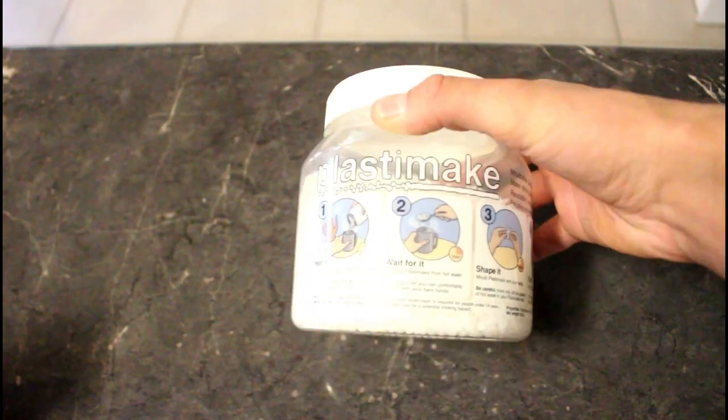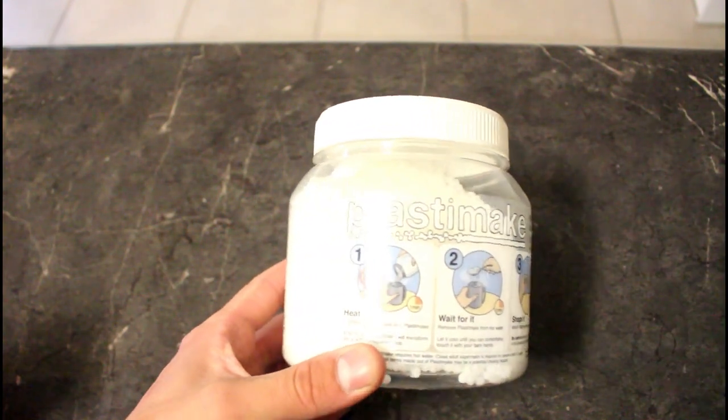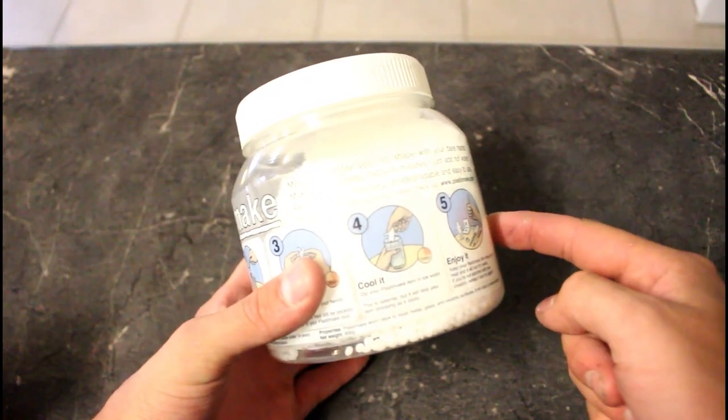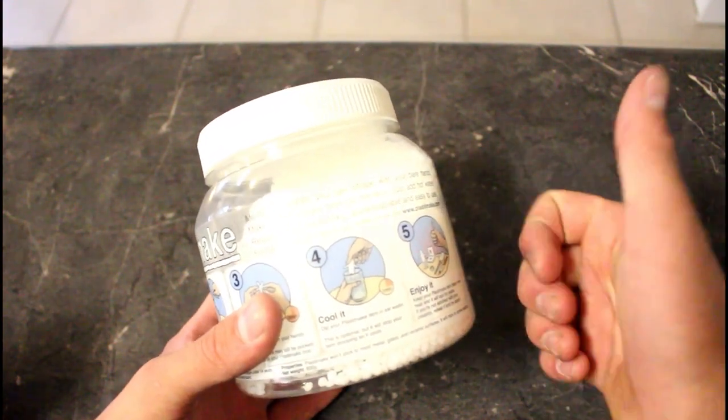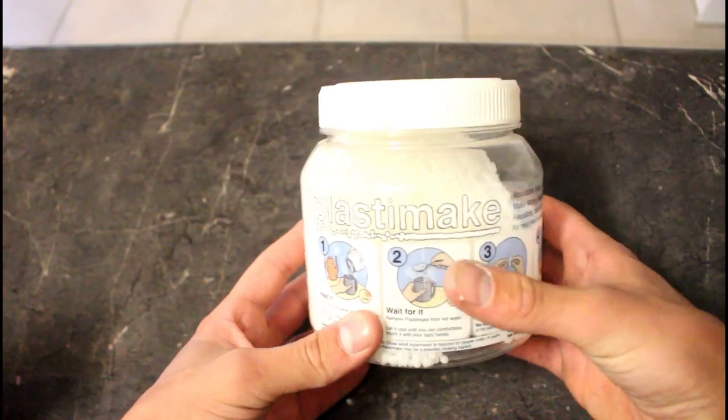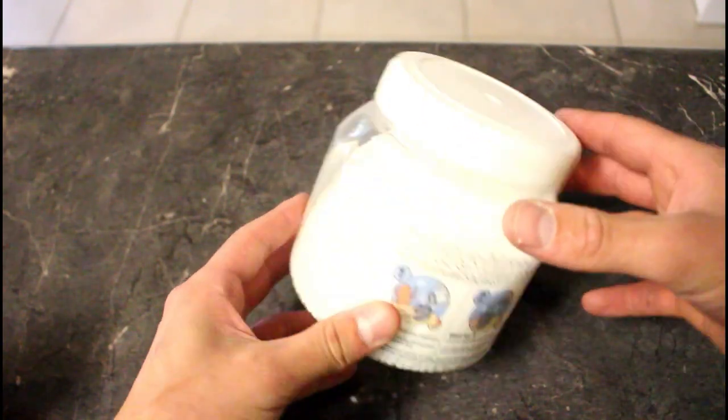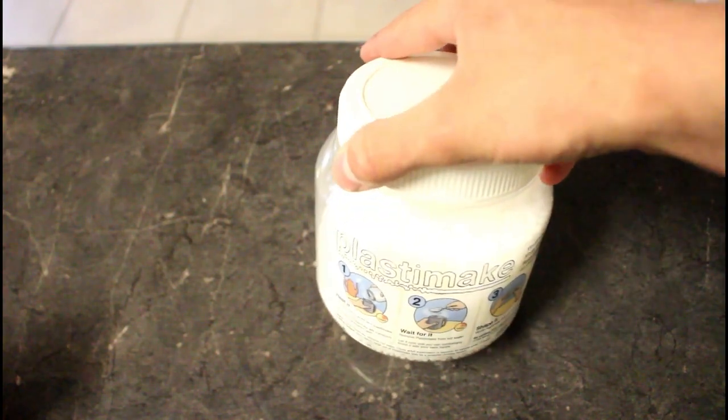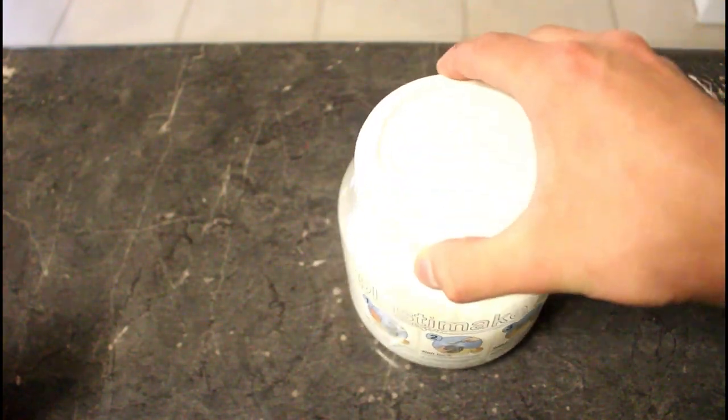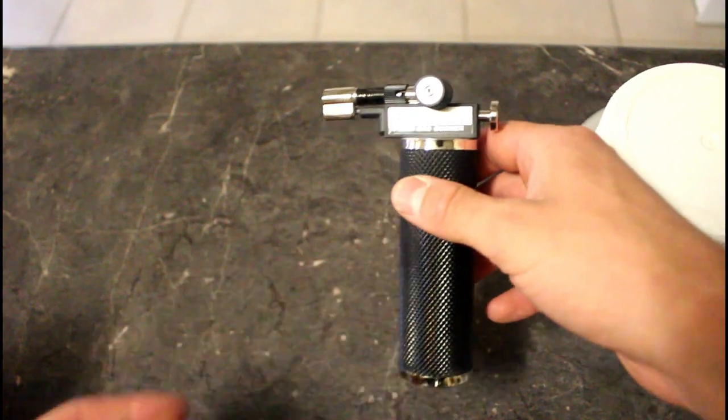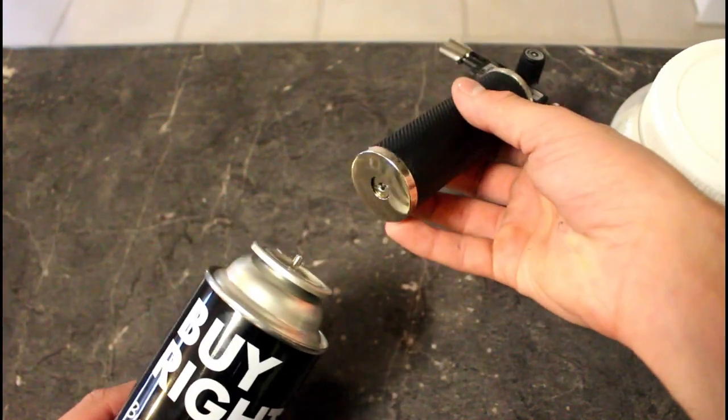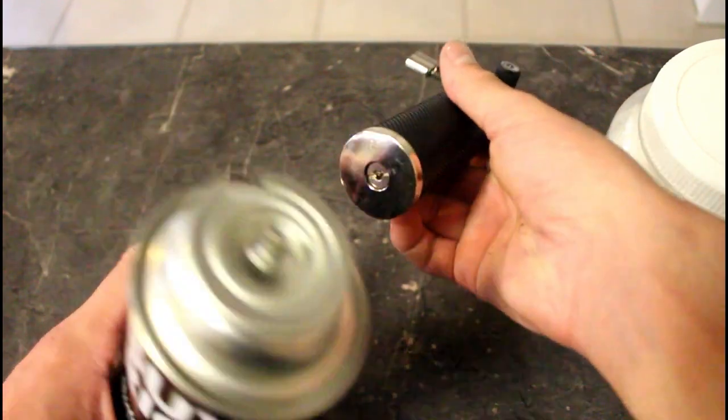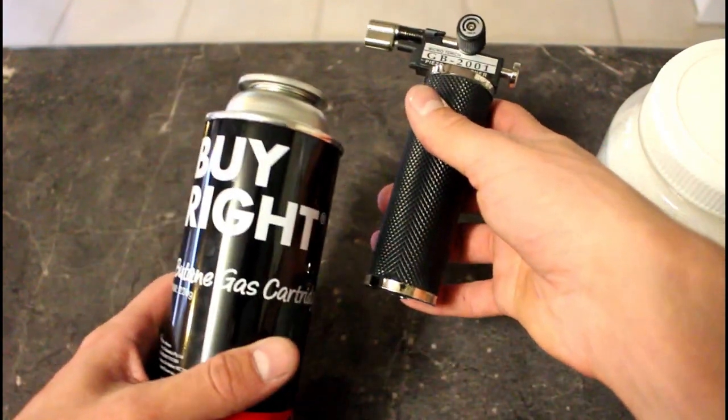This stuff here. This is Plastimake and I've made a video on this before. There will be a card in the top up there if you want to check that out. But this stuff is pretty cool. You put it in boiling water and it goes transparent and then you can mold it and shape it into anything you want. So the goal here is to make a connector or a little bit that will go over this and be small enough to fit in there. I hope this works.